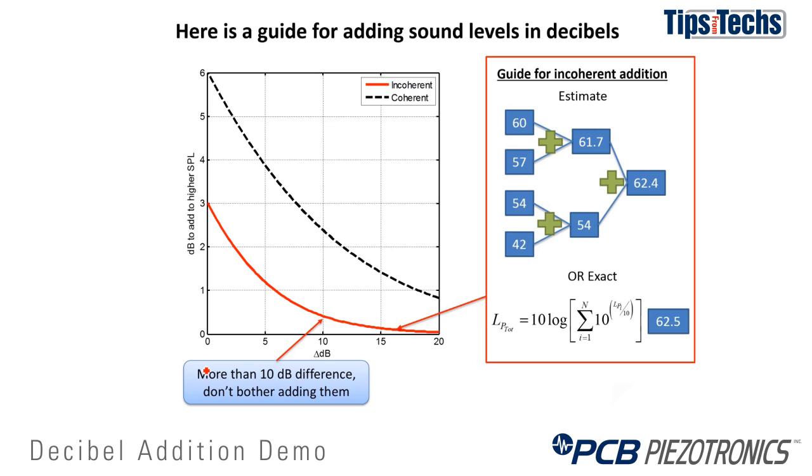Select the decibel difference between the two sound pressure levels that you're adding and locate that point on the horizontal axis. Then move up to the curve you've chosen and left to find the decibel level to add to the higher sound pressure level to get the total sound pressure level when the sources are added together. An example of this pairwise addition is shown on the right hand side.